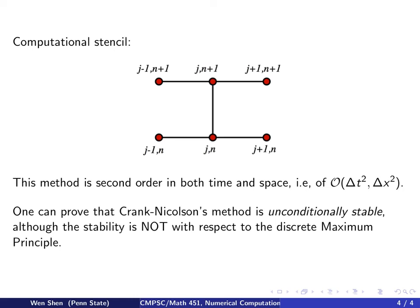Now, for the stability of Crank-Nicholson's method, one can prove that the method is actually unconditionally stable. But the stability for this method is not with respect to the discrete maximum principle. It's measured in a different norm. It's actually the discrete L2 norm of the unknown vector will be non-increasing in time. The proof involves a little bit more linear algebra, matrices, eigenvalues, and vector matrix norms, so we'll not go into the detail.